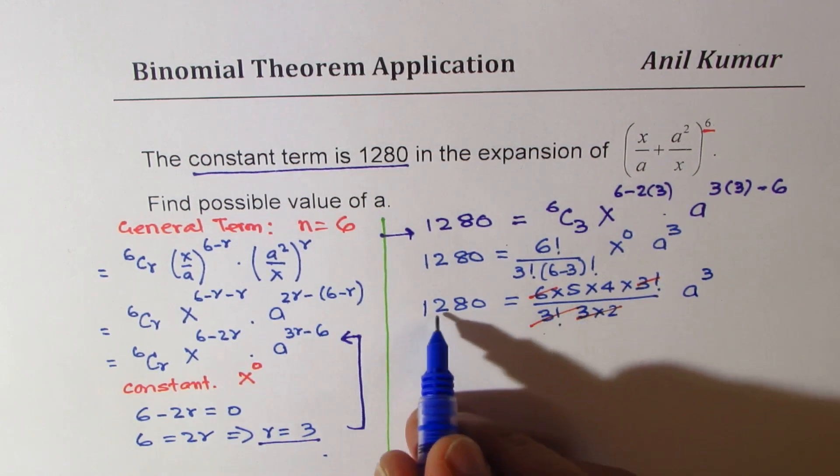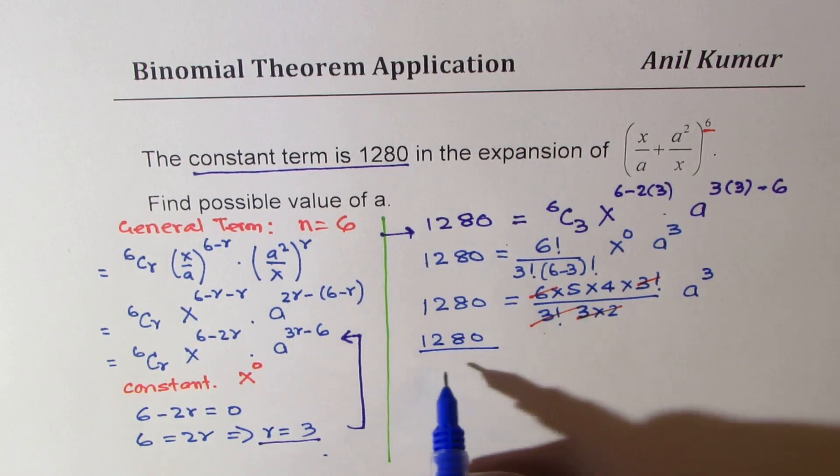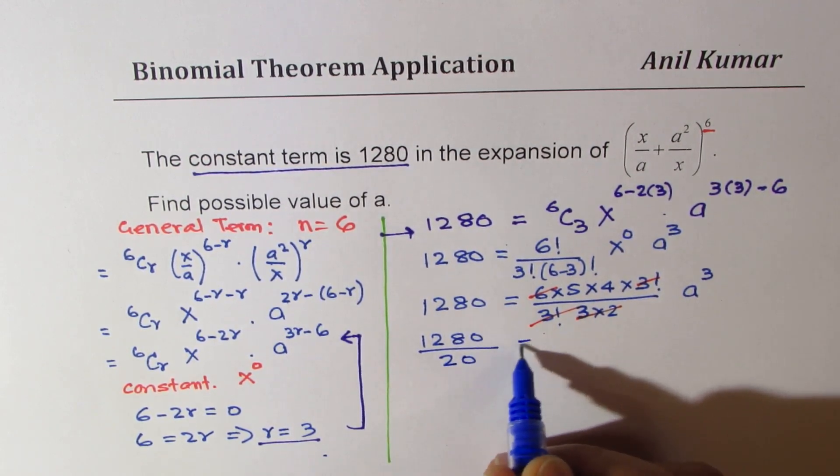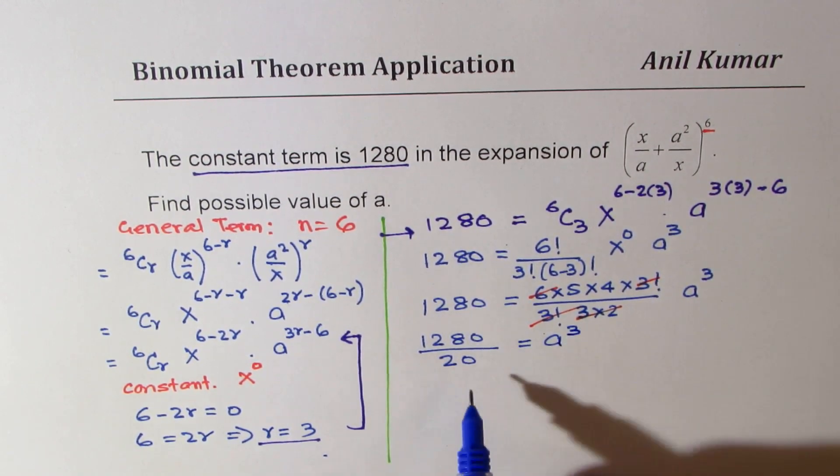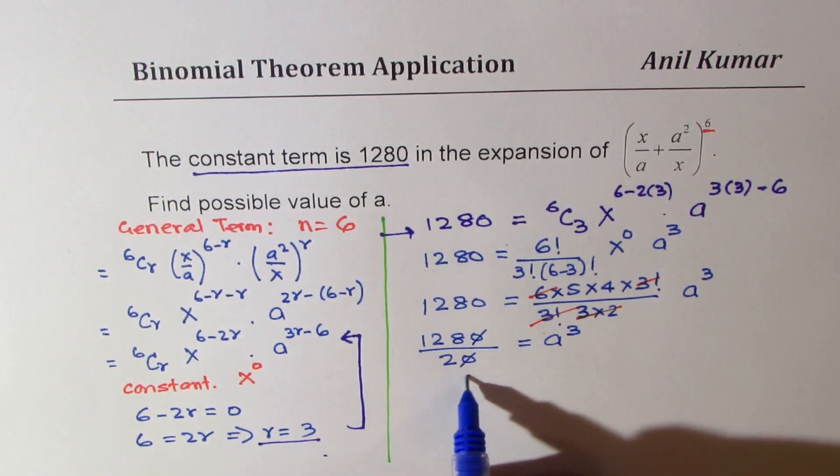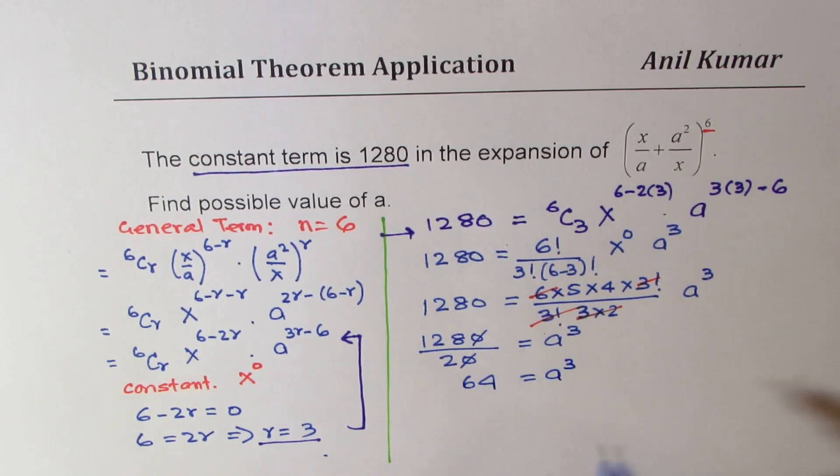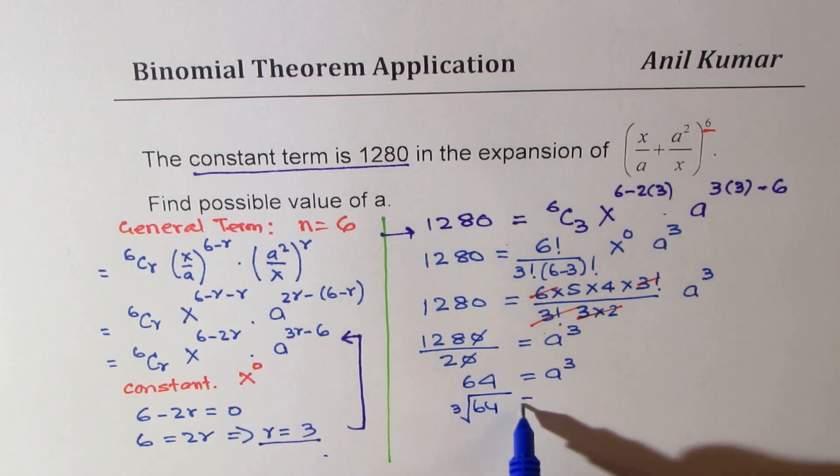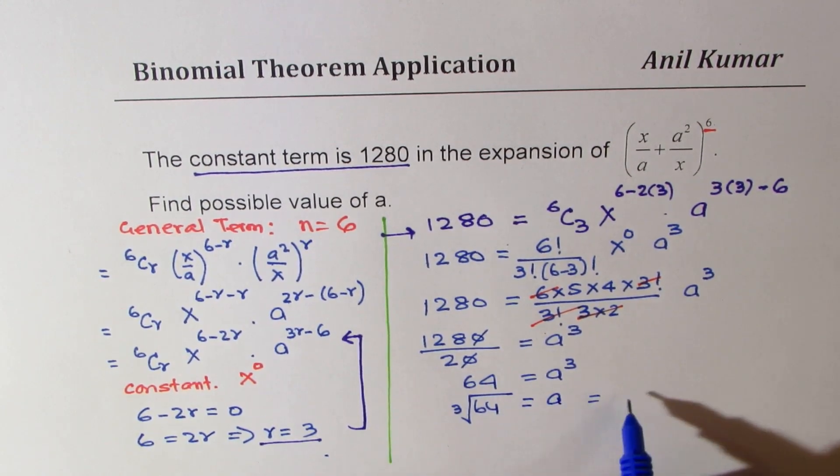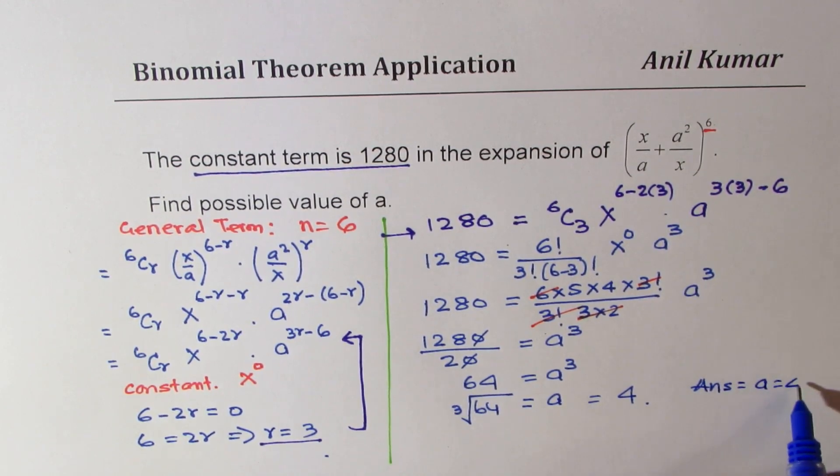Now we could divide by 20, this 1280, 5×4 is 20, equals a³. Now this is 64 equals a³. So that gives you cube root of 64 as equal to a, which is equal to 4. So we get our answer that a equals 4.